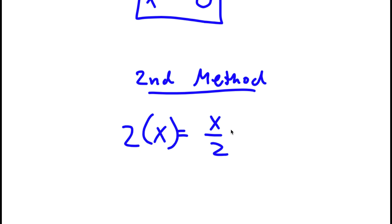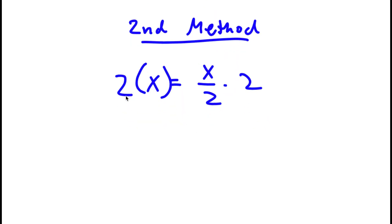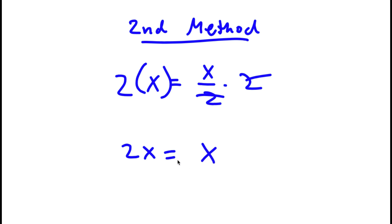So I have 2 times x is equal to x over 2 times 2. Well, 2 times x is simply equal to 2x. And x over 2 times 2, these two 2s cancel out, so I'll simply be left with x. So I have 2x is equal to x.